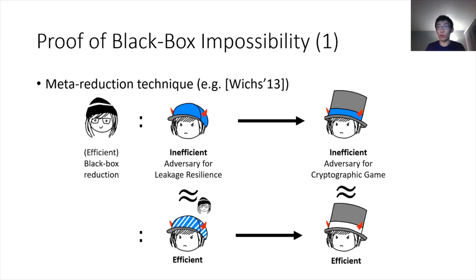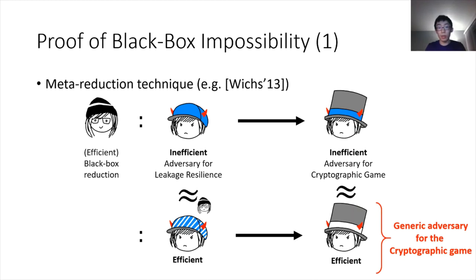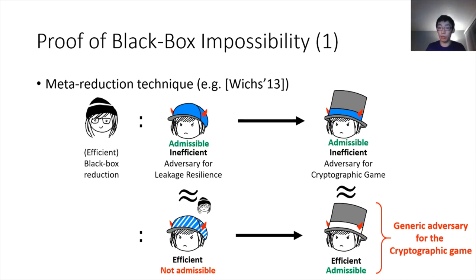The adversaries for the cryptographic games are indistinguishable. In particular, this new efficient adversary on the bottom right is actually a generic adversary for the cryptographic game, so this black-box reduction gives a generic attack for the cryptographic game. Notice that we did so without generally breaking the leakage resilience of the key exchange, because this efficient adversary for the key exchange is syntactically not really an adversary — it is cheating somehow. But because the inefficient adversary is not cheating, the black-box reduction cannot make the difference between them, and this still gives a good attack on the cryptographic game.